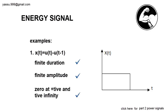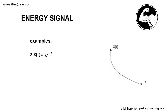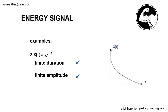Let's take another example. Example number two: x(t) = e^(-t). It is an exponential decay signal, so it is having a finite duration. Is it having a finite amplitude? Yes. At some time the amplitude is going to 0, so it satisfies the second condition. At t tends to plus infinity and minus infinity, is it having 0 amplitude? Yes. So it satisfies all conditions — the given signal is an energy signal.